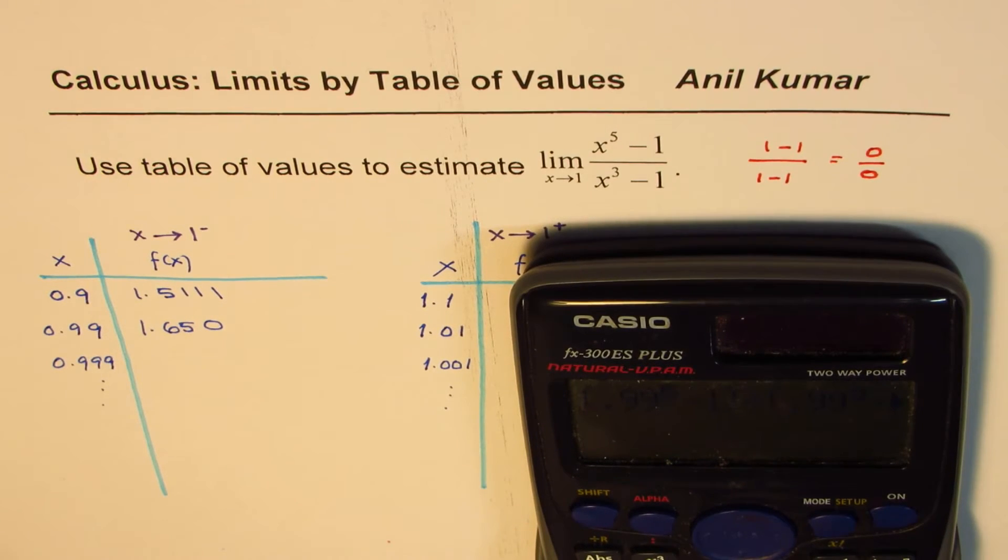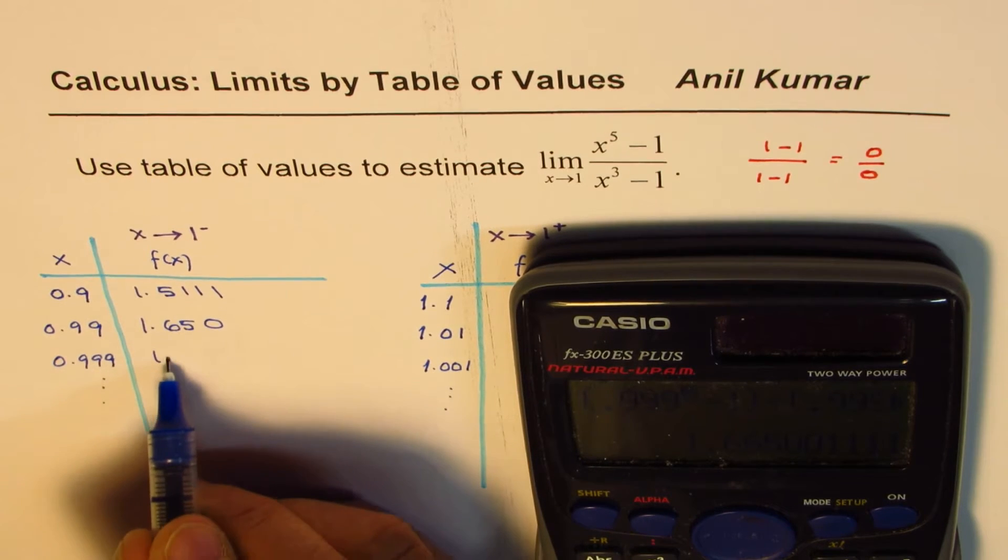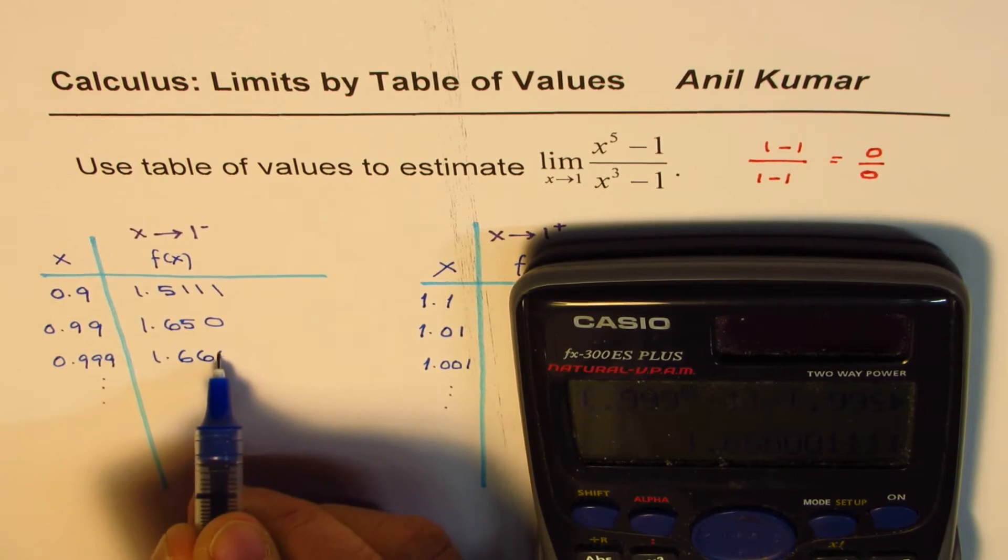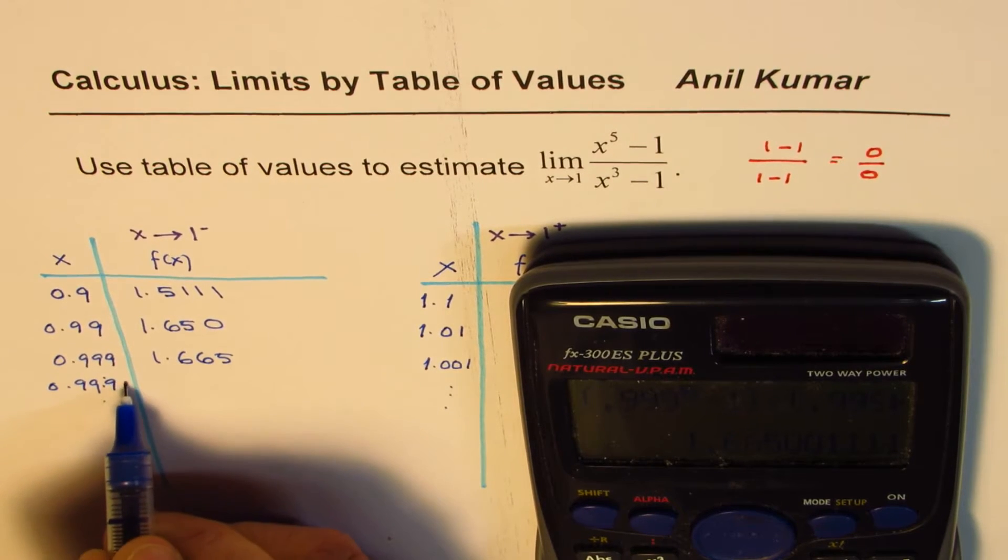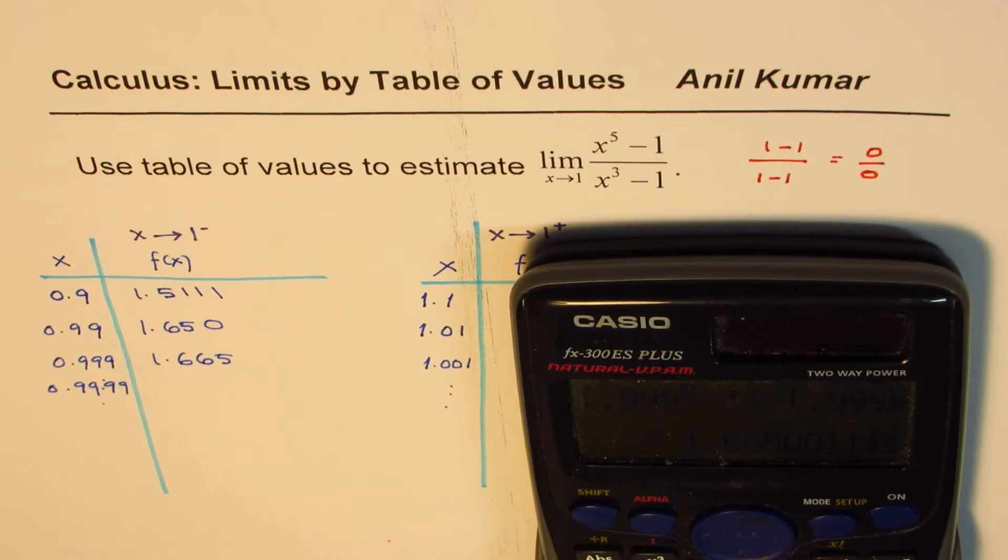Now I'm going to change this to 0.999. And then one more. In the denominator again, 0.999. So it gives us 1.665. You can go further. Let me just put 4 9s here, 0.9999. So here we go. It's so simple as that.